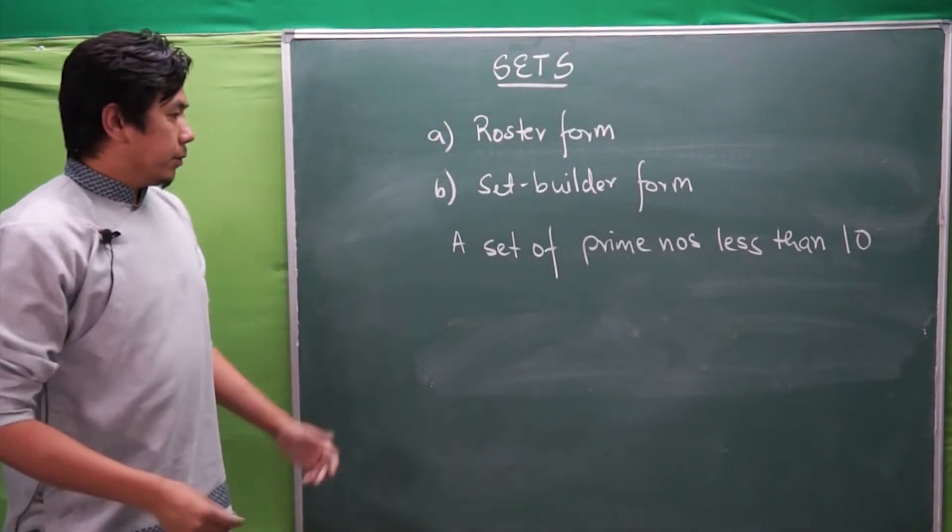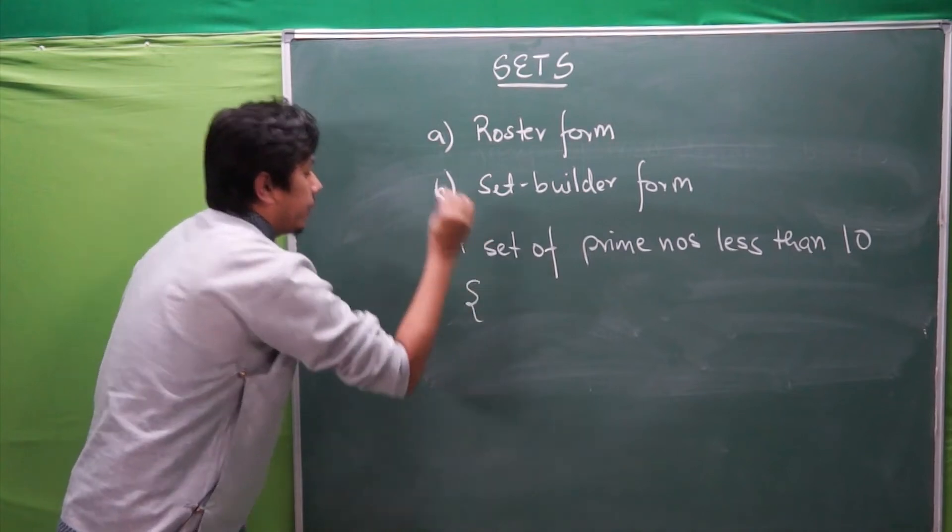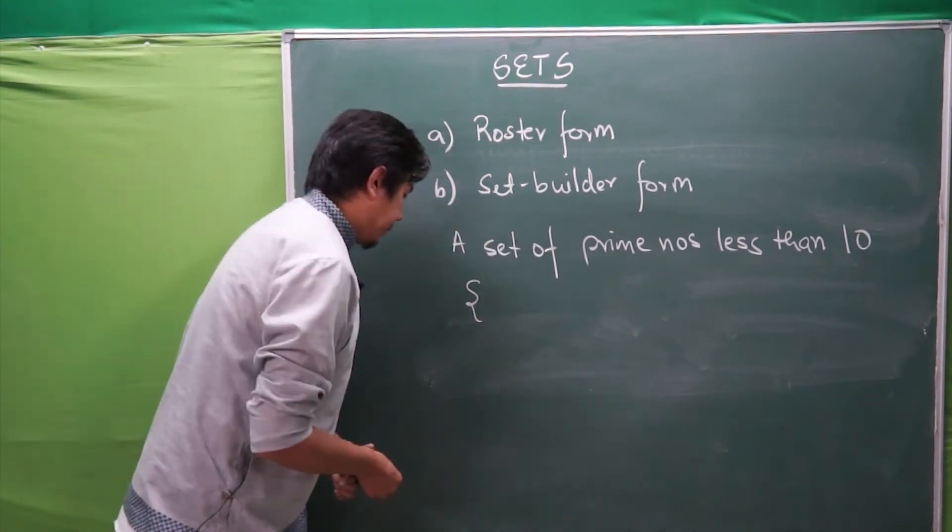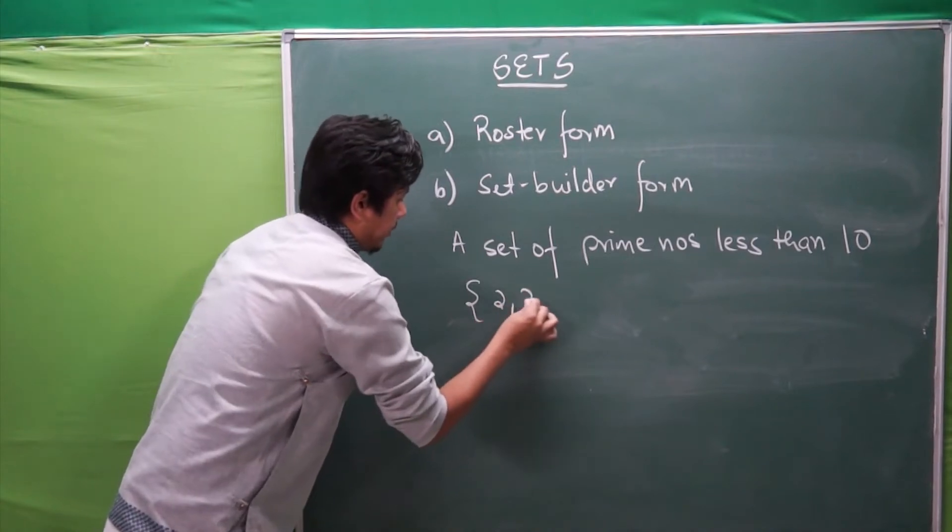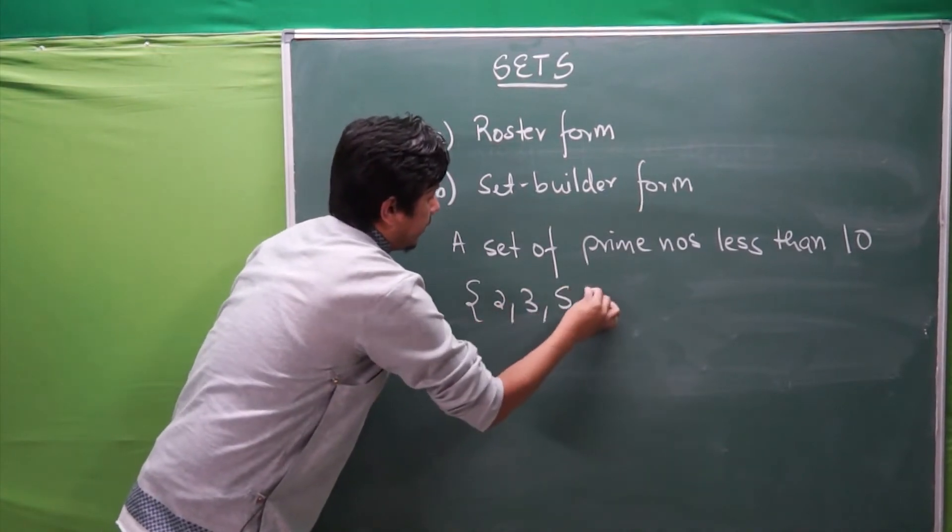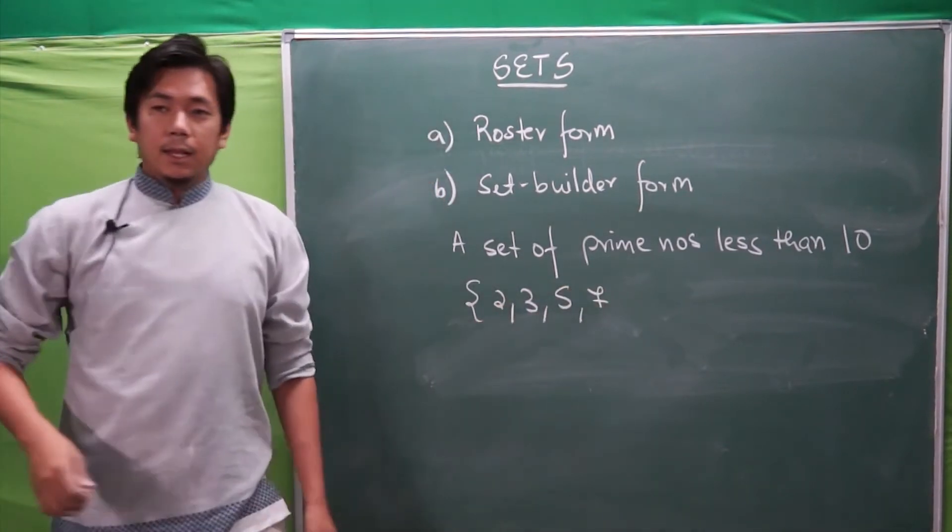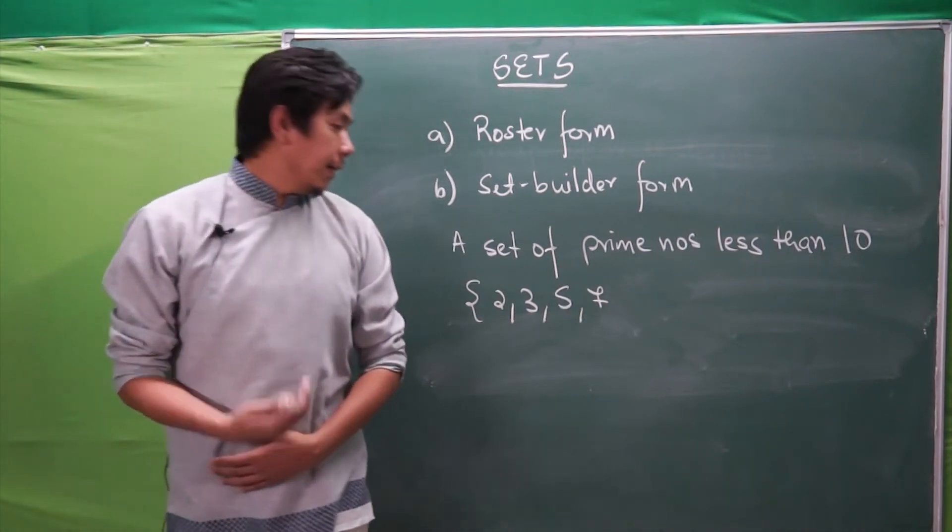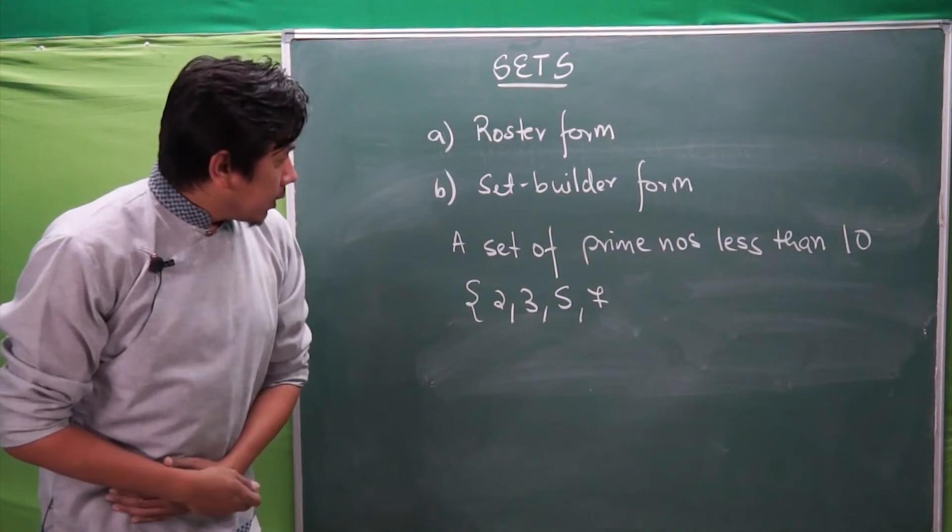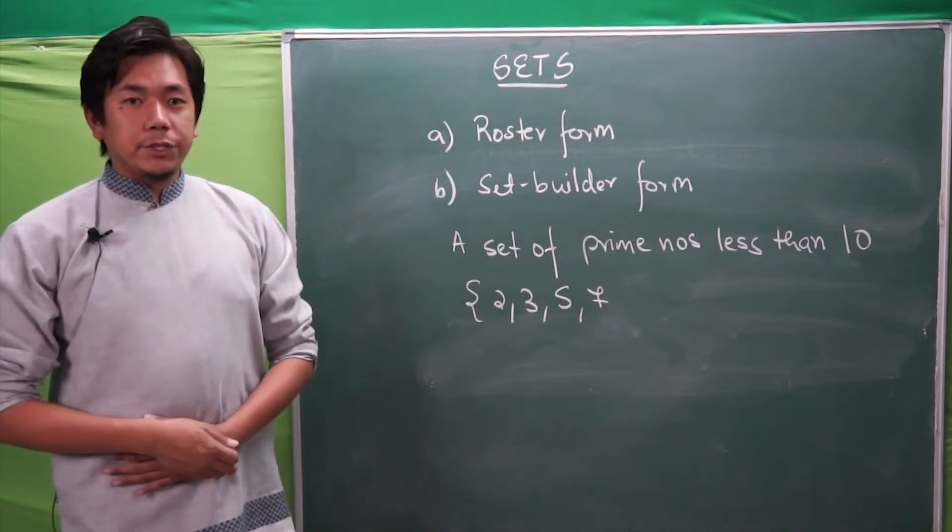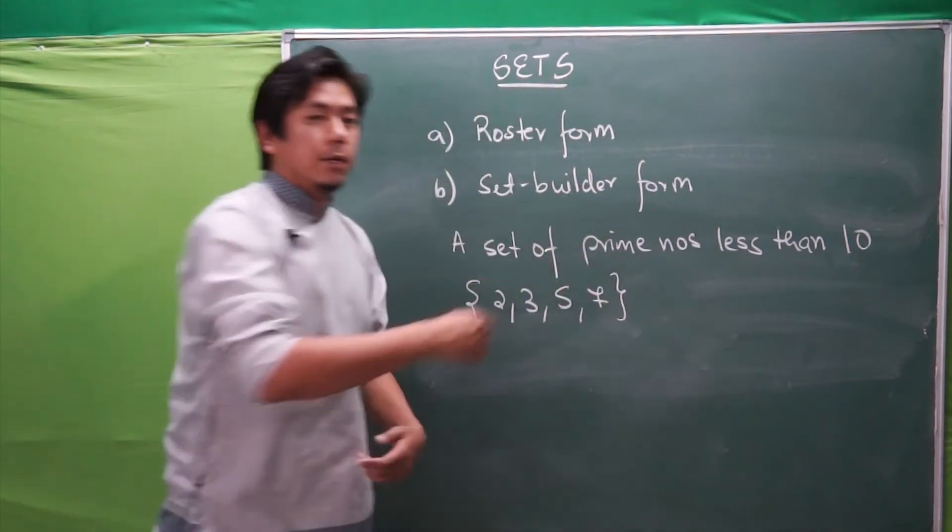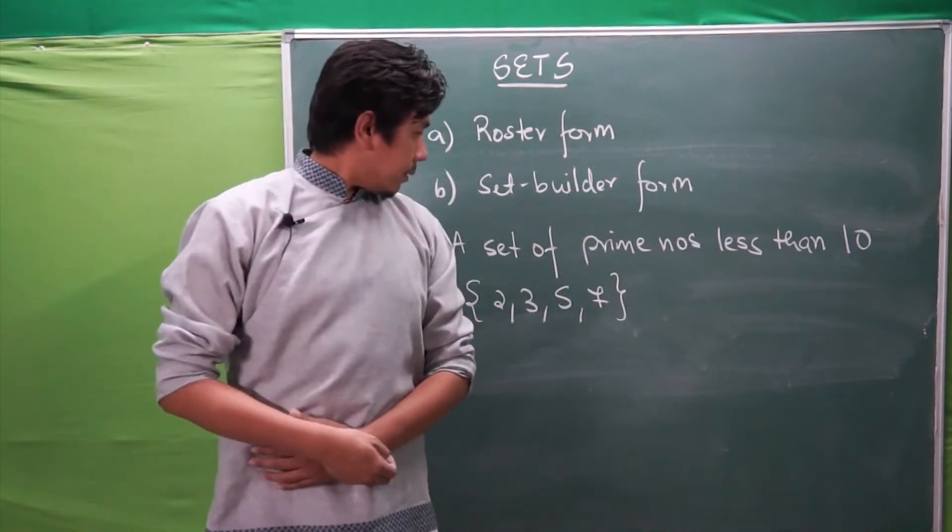To represent it in roster form, we begin with: Is 2 a prime number? 3, 5, 7. Anything greater than 7? Next prime number we have 11, which is not less than 10, which is greater than 10. So this is the end, and then we close it in braces.